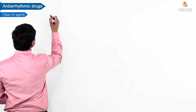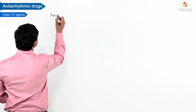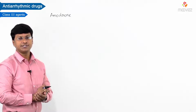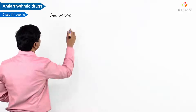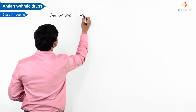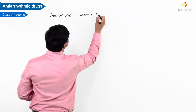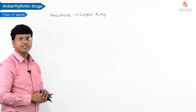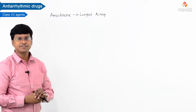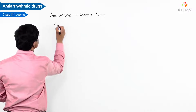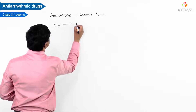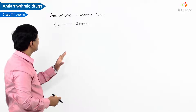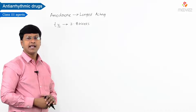Let me discuss amiodarone, a Class 3 antiarrhythmic agent. Amiodarone is one of the longest acting agents among all antiarrhythmic drugs. The half-life of amiodarone is around 3 to 8 weeks, making it one of the longest acting antiarrhythmic drugs.